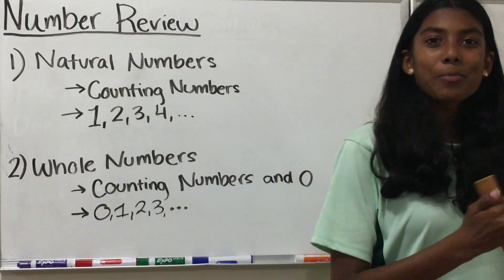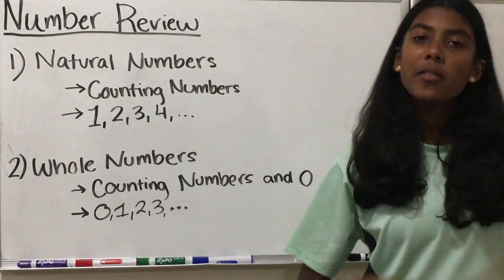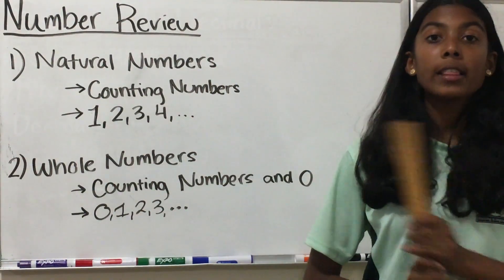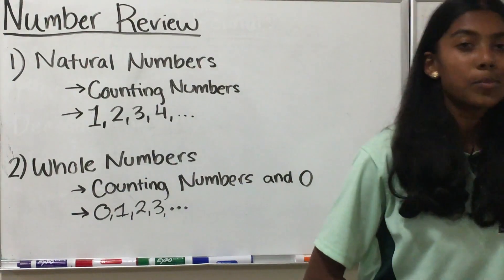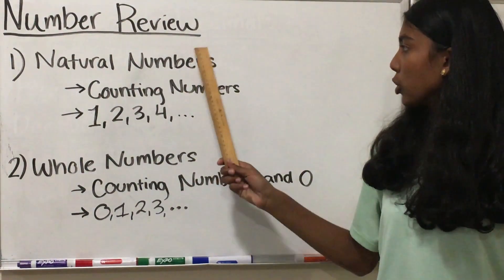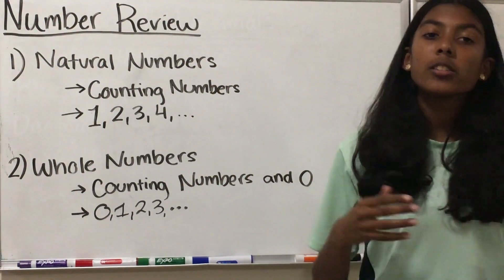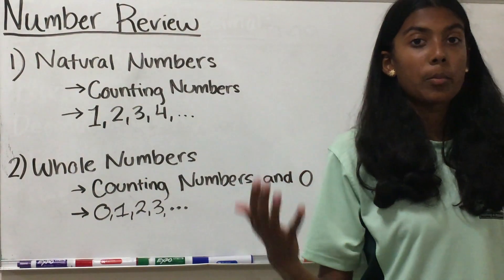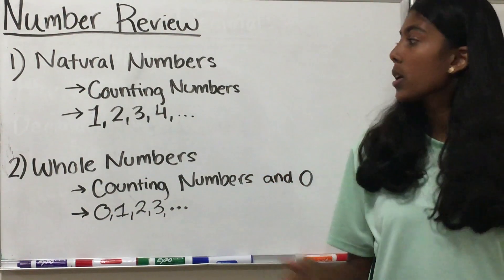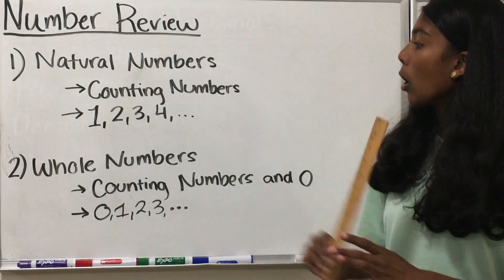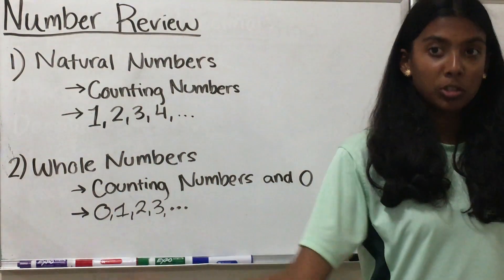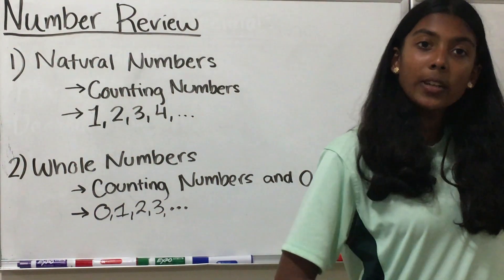Our first topic of today is a bit of a number review. Let's start with the types of numbers. Our first type of number is the natural numbers. These are our counting numbers, or the ones that we can count on our hands, and they are 1, 2, 3, 4, and so on to infinity.